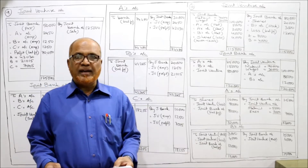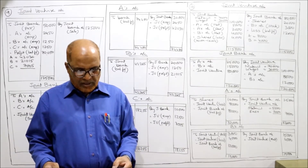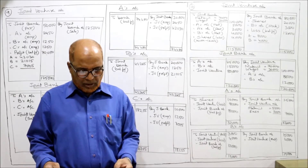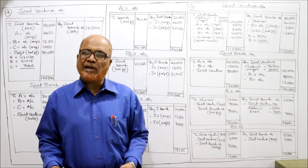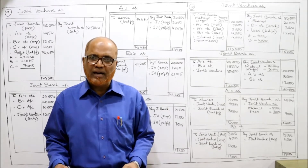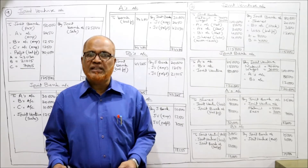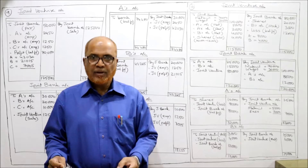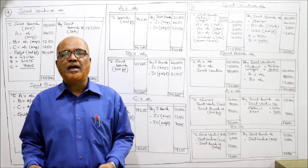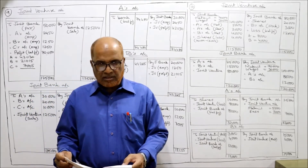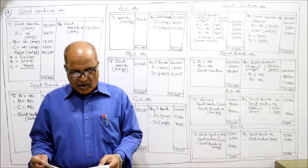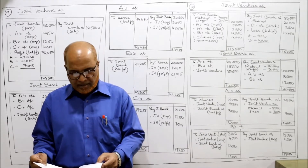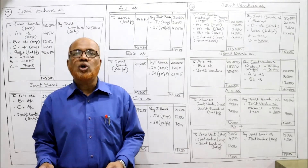Now see problem number 10. A and B doing business separately as building contractors, conducting jointly to construct a building for a newly started joint store company for a contract price of 1 lakh, payable as 80,000 by installment in cash and 20,000 in fully paid shares of the company. A and B are two contractors who enter into a joint venture contract to construct a building. A joint banking account is opened in the joint names - again the first method, separate set of books of accounts are opened. A paying in 25,000 and B 15,000.